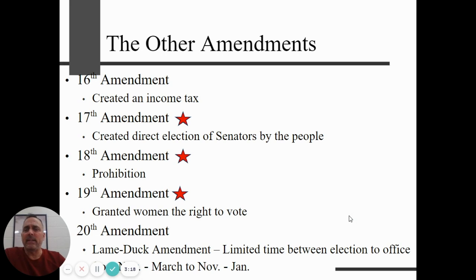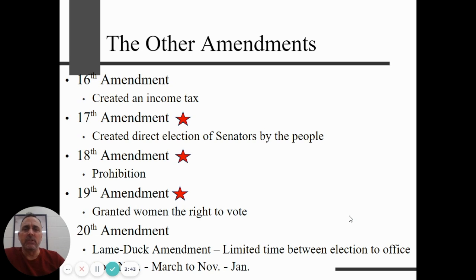The 16th Amendment created an income tax — we didn't have one before. The progressives in the early 1900s needed money to solve social problems. The 17th Amendment fixed another founding father mistake: originally senators were picked by the politicians in each state, but the 17th Amendment established the direct election of senators by the people of the state. So people in Wisconsin pick their two senators, not the politicians.